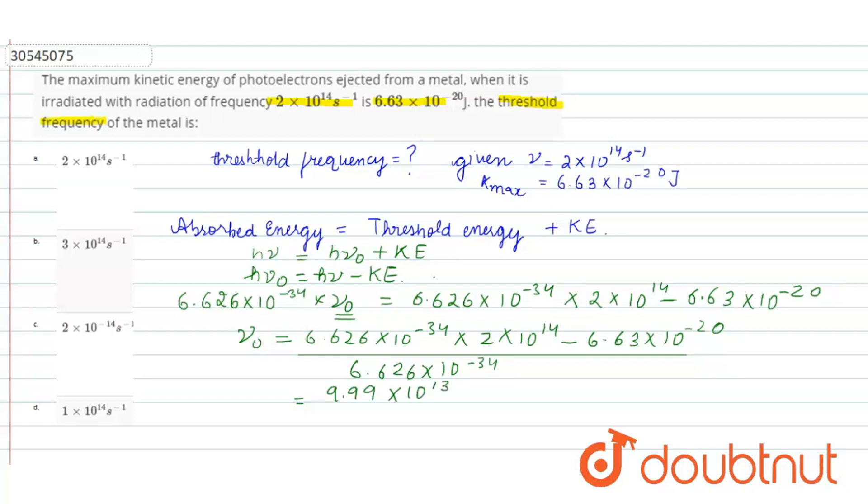And upon 6.626 into 10 raise to power minus 34, the answer comes out to be 9.0 into 10 raise to power 13 which is equal to 1 into 10 raise to power 14 per second.